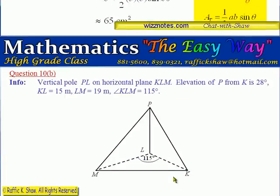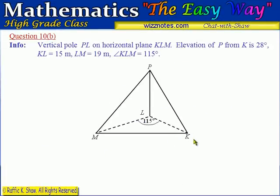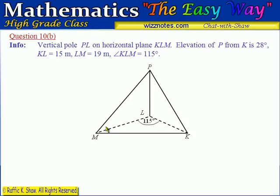Let's now move to part B. Part B gives us a diagram of a vertical pole PL on horizontal plane KLM. The angle of elevation of P from K is 28 degrees, KL is 15 meters, LM is 19 meters, and angle KLM is 115 degrees. We have a three-dimensional situation with two triangles in the vertical plane and one triangle on the horizontal plane.